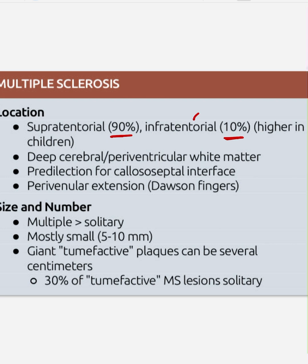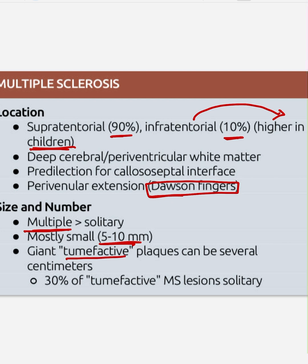Regarding location in multiple sclerosis: supratentorial involvement accounts for 90% of cases and infratentorial for 10%. Infratentorial is more common in children. Deep cerebral or periventricular white matter involvement is seen, with a predilection for the callosal-septal interface and periventricular extension — referred to as Dawson's fingers. Lesions are multiple, mostly small, 5 to 10 mm, though they can sometimes exceed 2 centimeters — termed tumefactive.